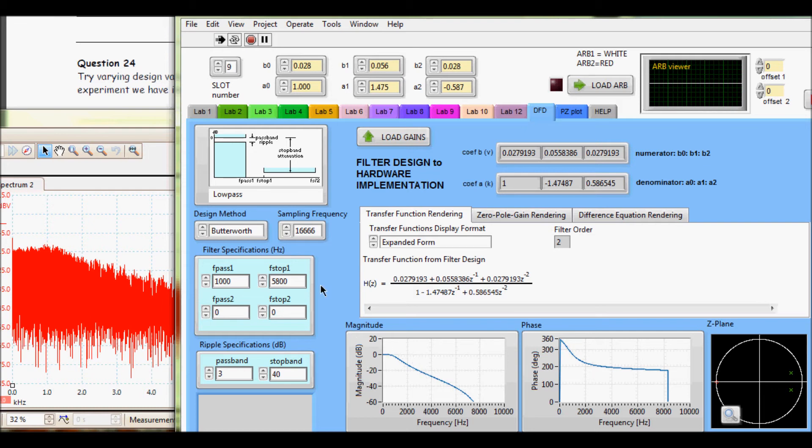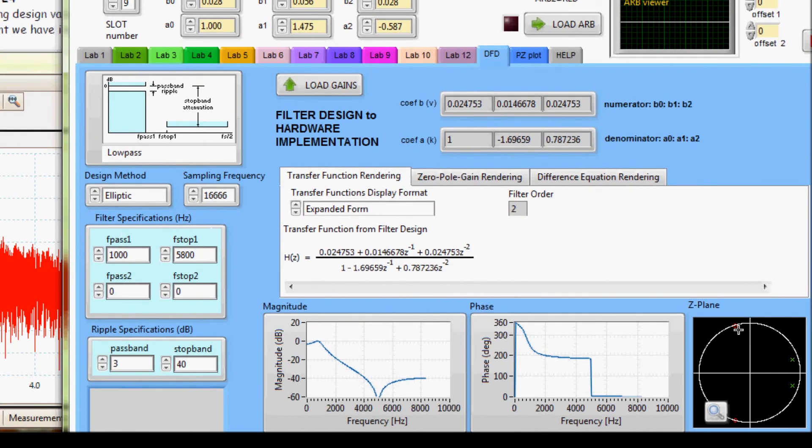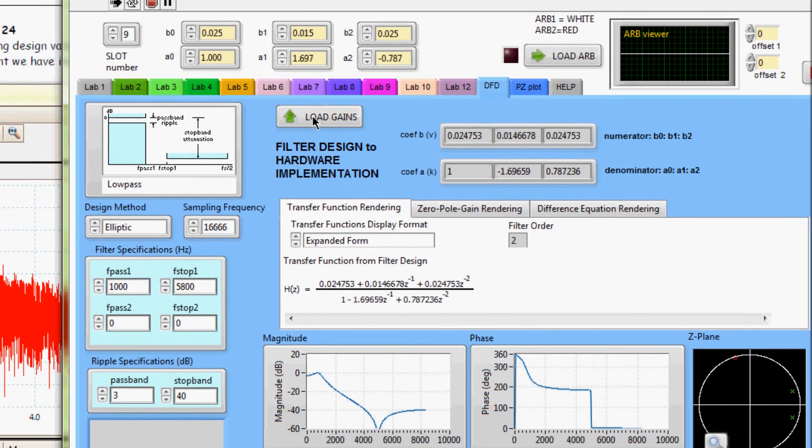Here you can see a Butterworth filter has been implemented, now switching to an elliptic filter. Different response, different pole zero representation in the z-plane, different coefficient values, and hence different implementation gains.